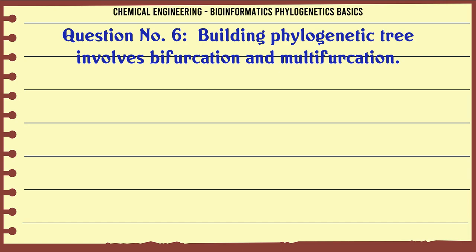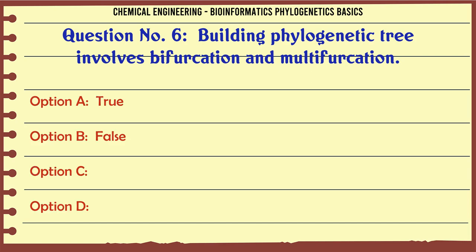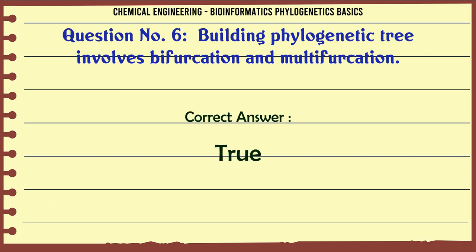Building a phylogenetic tree involves bifurcation and multifurcation. a. True. b. False. The correct answer is: True.